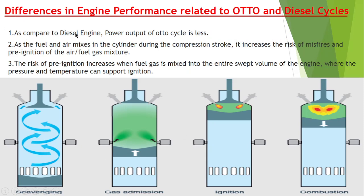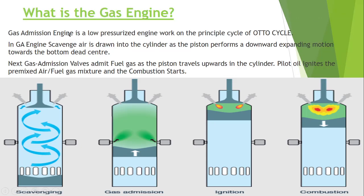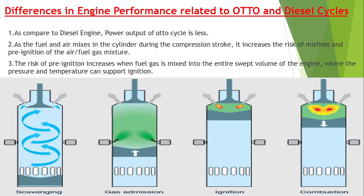Compared to the diesel engine, the power output of the Otto cycle is less. The gas admission engine works on the Otto cycle, while gas injection engines work on the diesel cycle. The diesel cycle is more thermally efficient than the Otto cycle. Therefore, a gas injection engine will have much higher thermal efficiency than a gas admission engine.